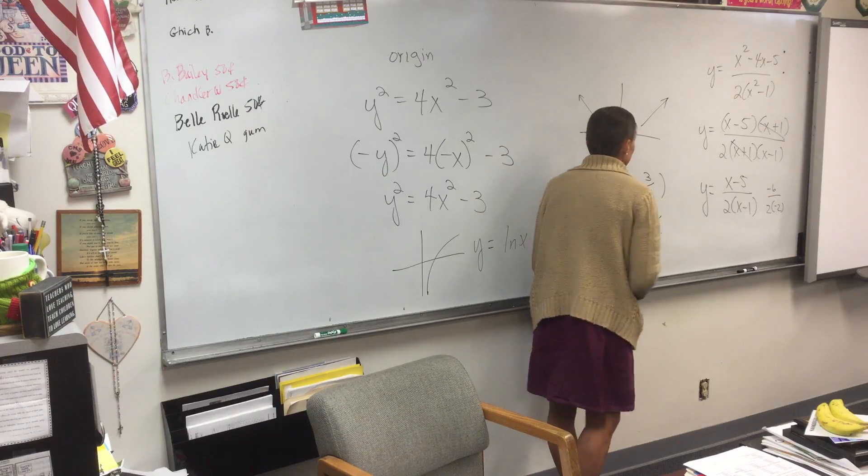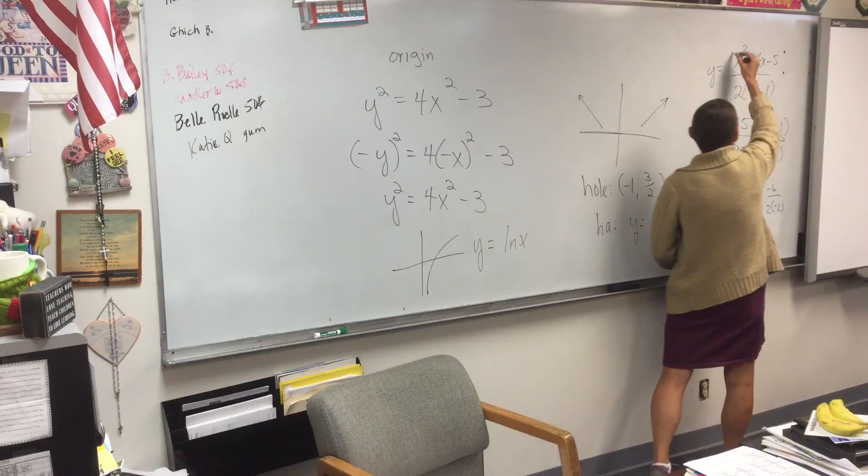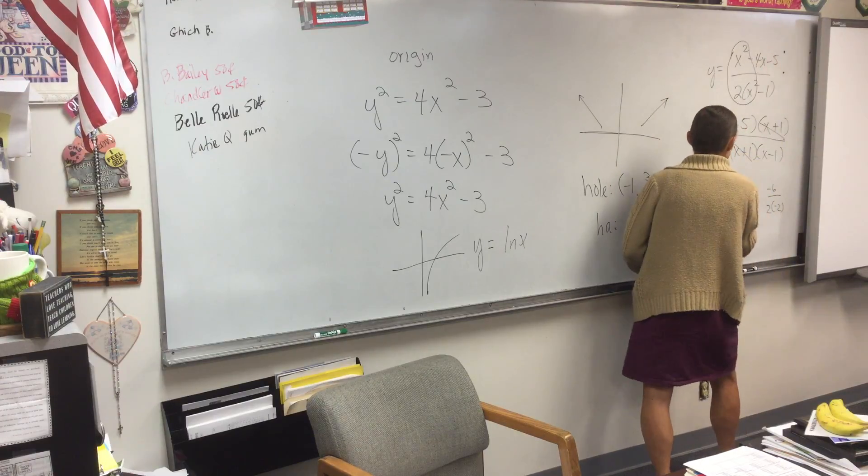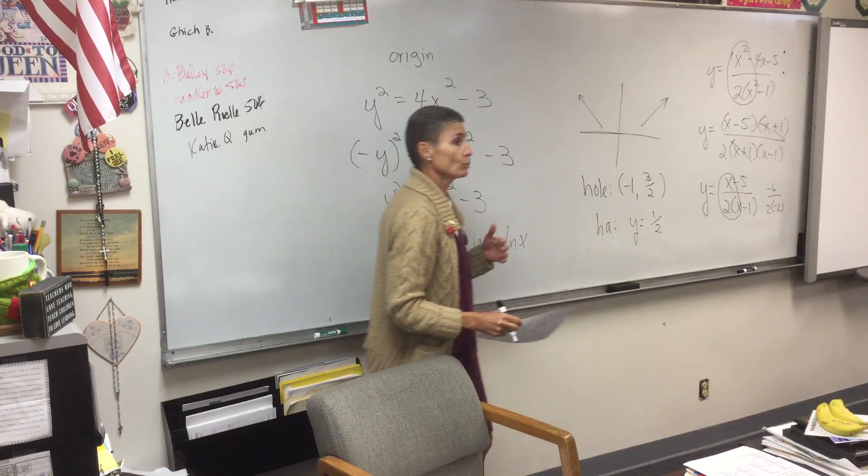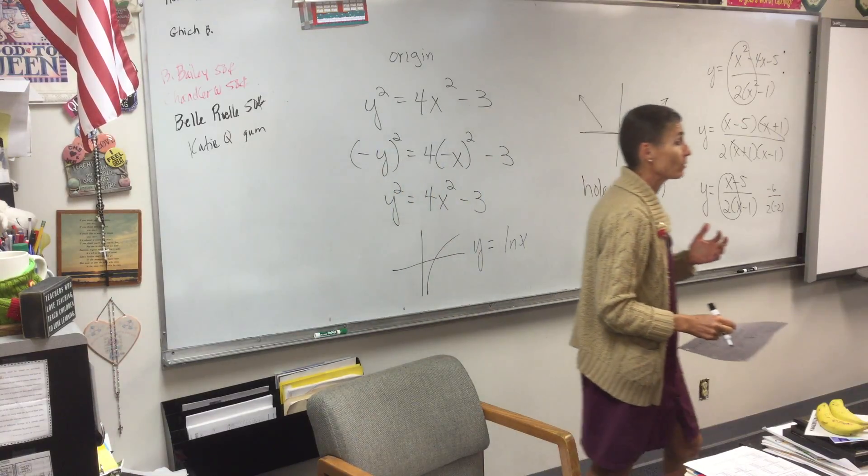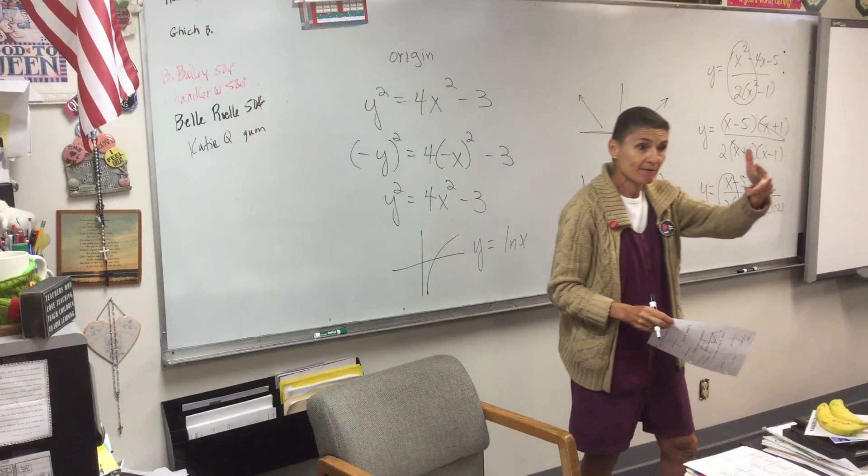Horizontal. Horizontal at Y equals what? One half. You can go back to the beginning if you want to, or you can just look right here. Your horizontal is Y equals one half. What are the rules for horizontal asymptotes? If the powers match, you just make that fraction.